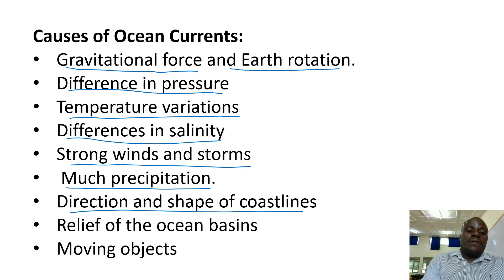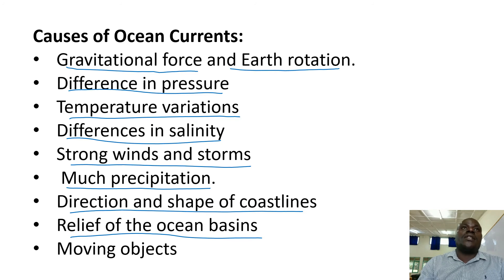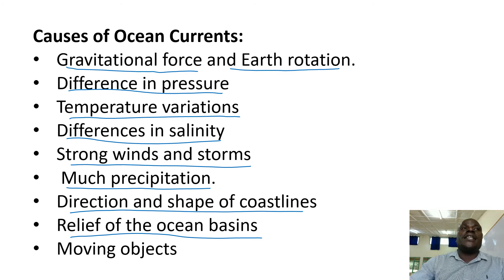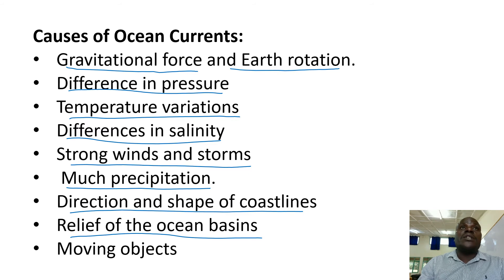Then we have relief of the oceanic basins, what we called in our previous lesson marine relief. For example, if the ocean contains extensive flat areas at the bottom which we call the deep plains, or if it has a continental slope and continental shelf, and trenches — these will affect the movements of water differently and therefore generate different currents.